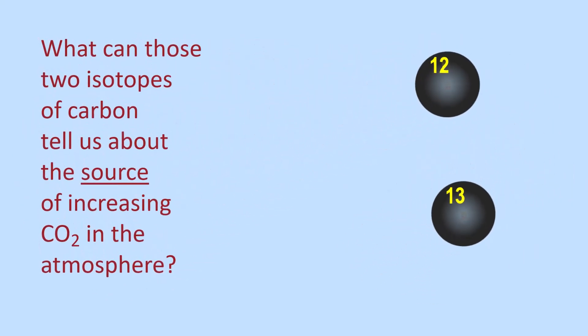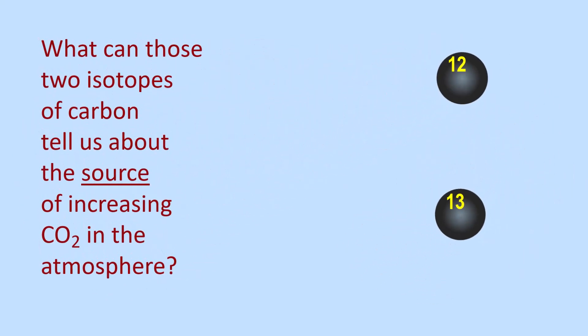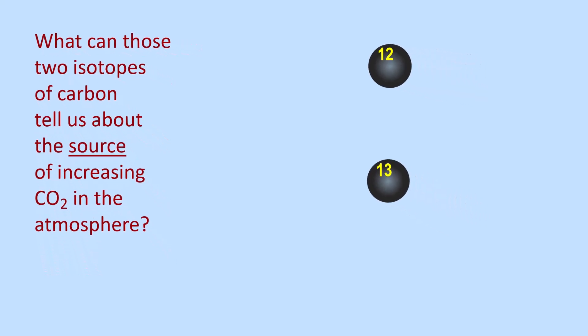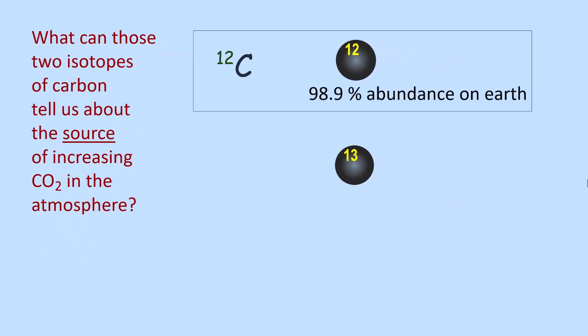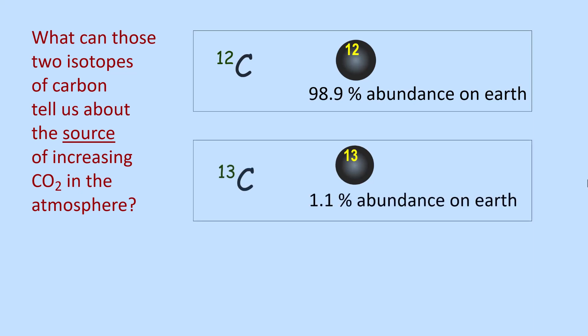So what can these two isotopes tell us about the source of increasing carbon dioxide in the atmosphere? It is the abundance of each isotope that we are concerned with. Carbon-12 makes up 98.9% of all carbon atoms on Earth, and carbon-13 makes up 1.1% of all carbon atoms on Earth.